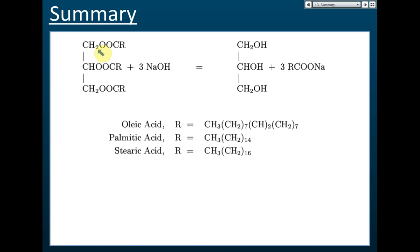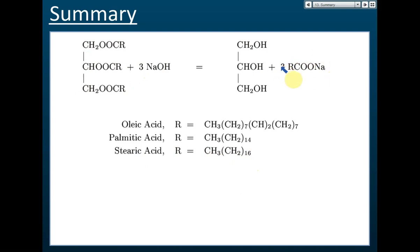In summary: the fat molecule has the formula CH₂OCR, where R is the long carbon chain. For example, R can be oleic acid, palmitic acid (from palm oil), or stearic acid, which contains 17 carbons. When this fat molecule reacts with sodium hydroxide, it forms glycerol and the salt of fatty acid — this salt is soap. That is the summary of the chemical reaction.